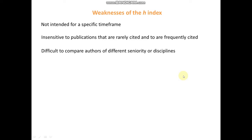We cannot compare researchers in different fields using H-index, because we don't know from which community the citations are coming. Also, H-index can vary depending on the database used, since the database only takes available data to calculate it. If research papers are not published online, they will not be included in the H-index calculation.